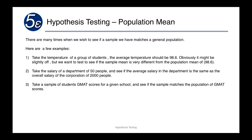For example, take the temperature of a group of students — the average temperature should be 98.6, and obviously it's going to be slightly off, but we want to test to see if this sample mean is different from the population mean. Another example might be take a salary of a department of 50 people and see if the average salary in the department is the same as the overall salary of the corporation of 2,000 people. We can also take a sample of GMAT scores for a given school and see if it matches the population of GMAT scores across the nation.